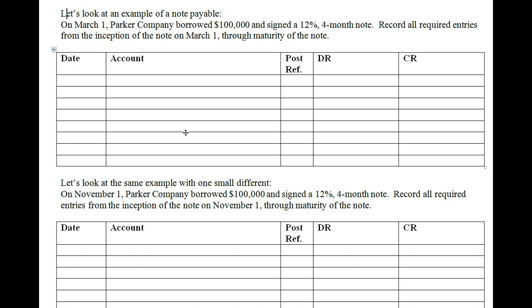The interest rate on the note is the annual interest that will accrue. Keep in mind, on a notes payable the interest is always expressed in annual terms — so 12% is 12% per year. If it's only a three-month note, you only accrue three months out of twelve months of interest. The maturity date is the actual date the note is due. The maturity value is the amount due at the maturity date: the principal plus the total accrued interest for that period.